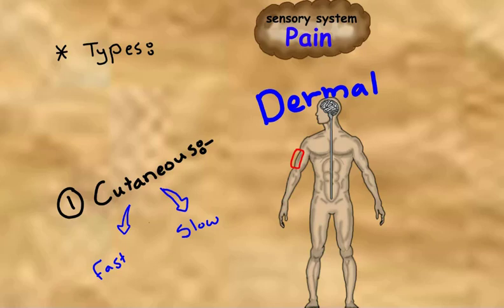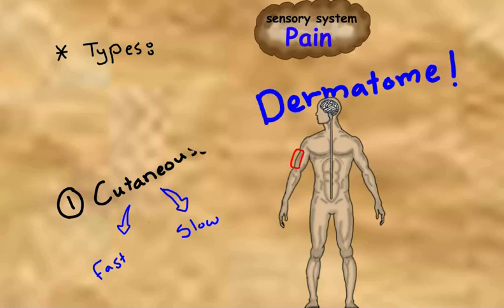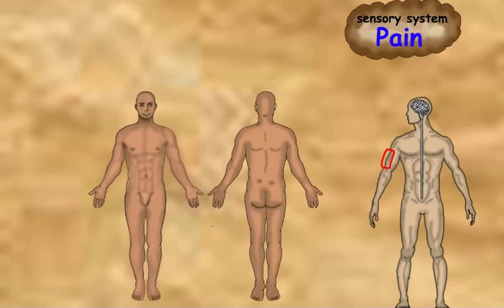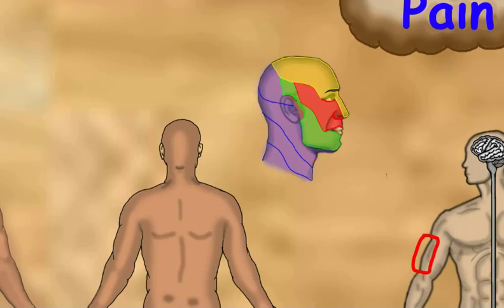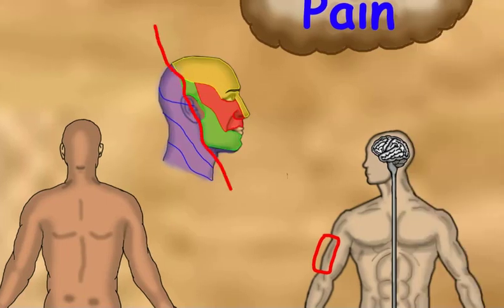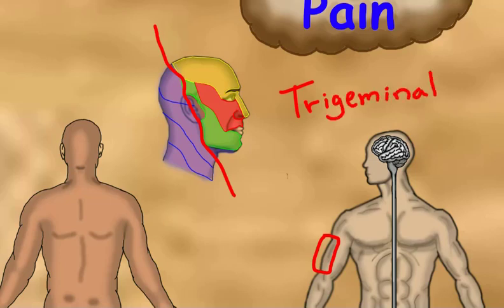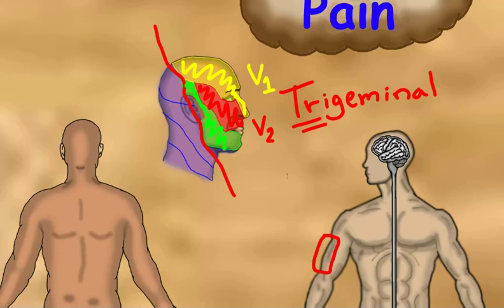A dermatome is an area of skin supplied mainly by one spinal nerve. Looking at the body dermatomes, starting with the face: three branches of the trigeminal nerve supply the face, with a small area in front of the ear supplied by the facial nerve. V1 is the ophthalmic branch in yellow, V2 is the maxillary branch in red, and V3 is the mandibular branch in green.